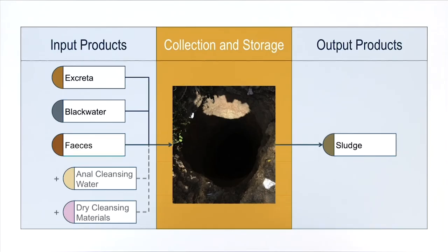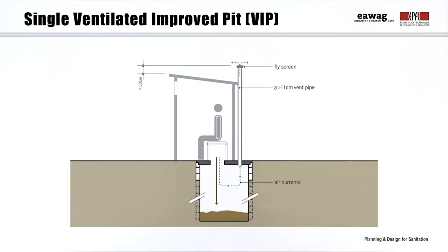As we have seen for the user interface, the different technologies have different input and output products. This also applies to each technology from the other functional groups including collection and storage. They are then called ventilated improved pits or VIP.